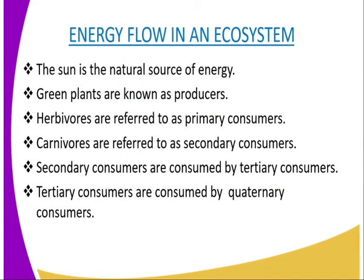Let us now get deep into the energy flow in an ecosystem. The sun is the natural source of energy. It is this energy that is trapped by the green plants for photosynthesis. This process produces food which is potential energy in chemical form, e.g. glucose. Therefore, green plants are known as producers in an ecosystem.